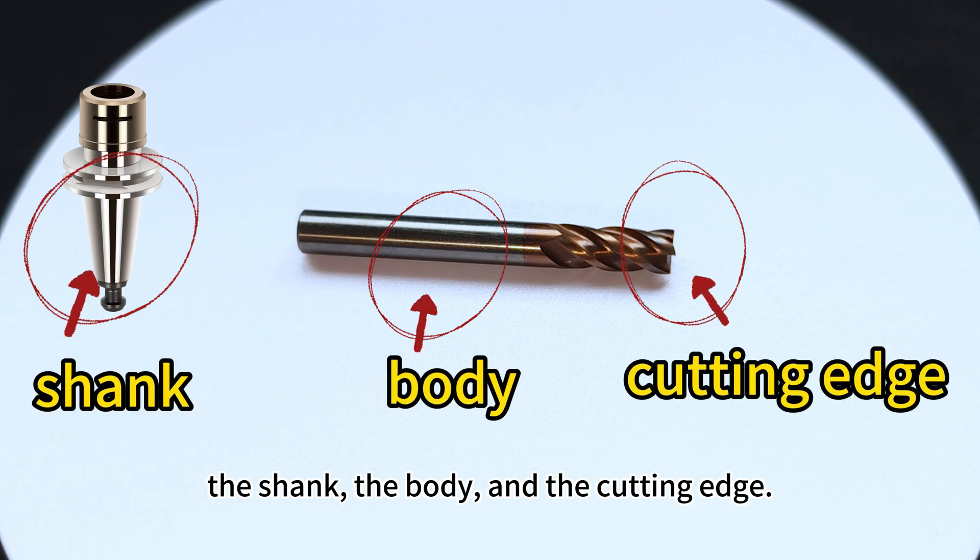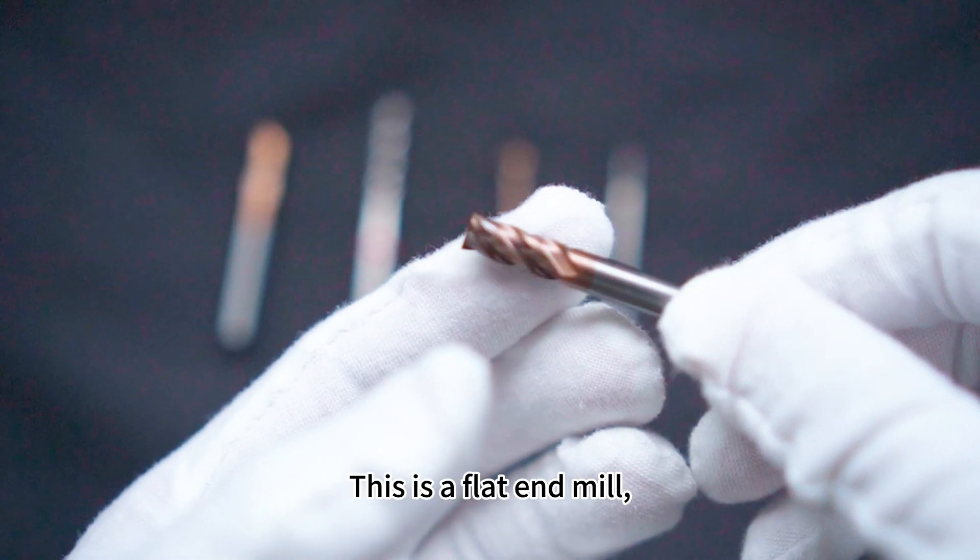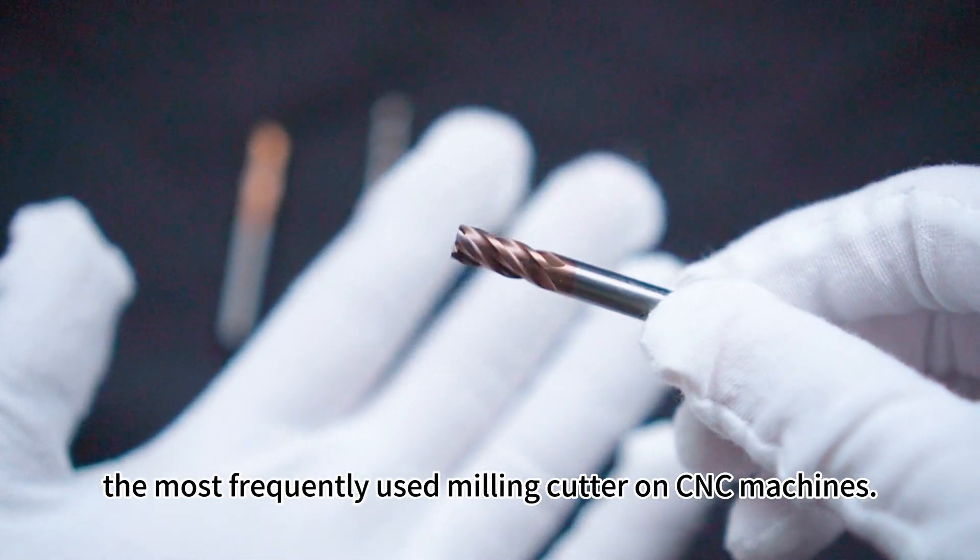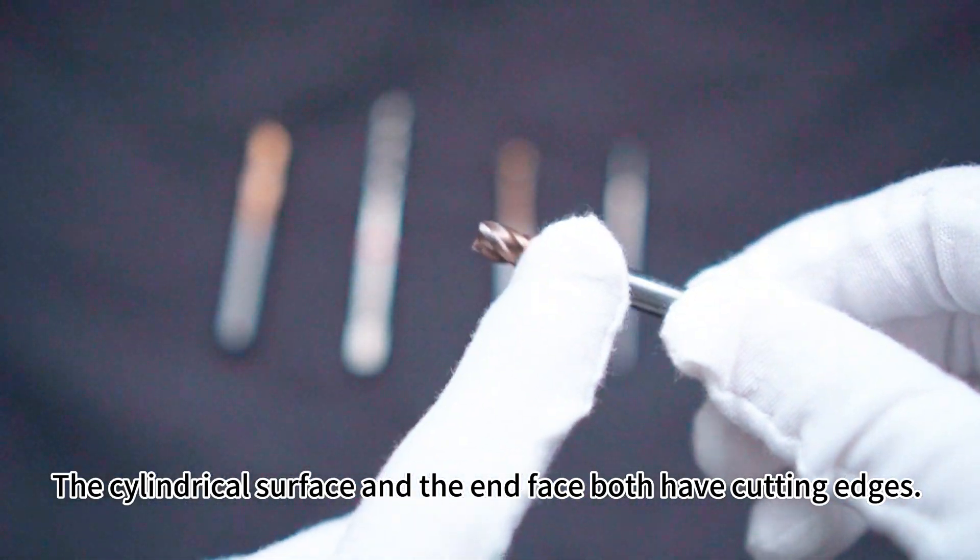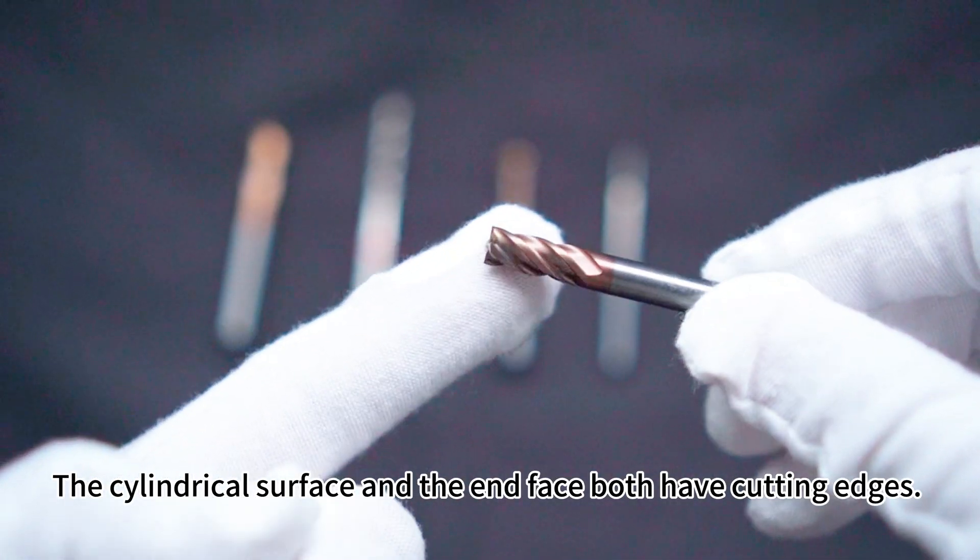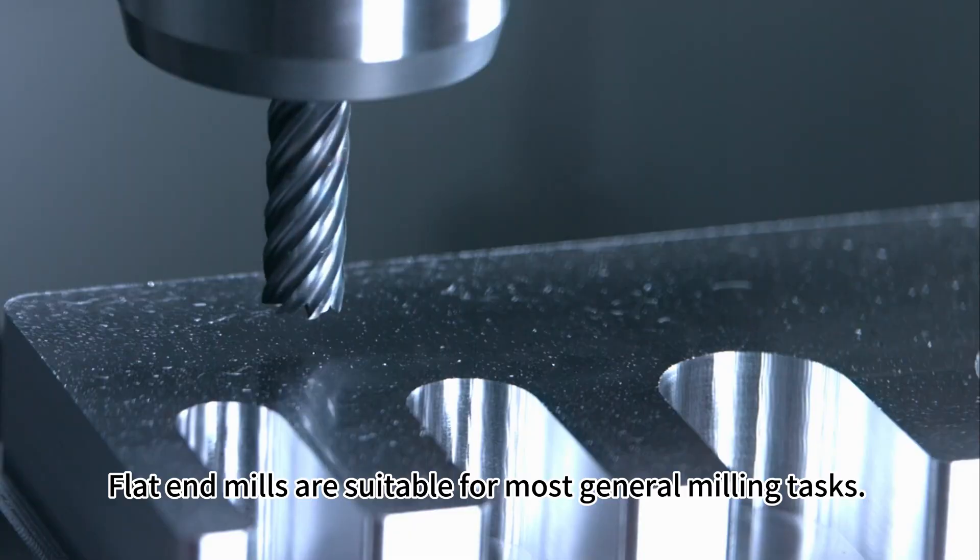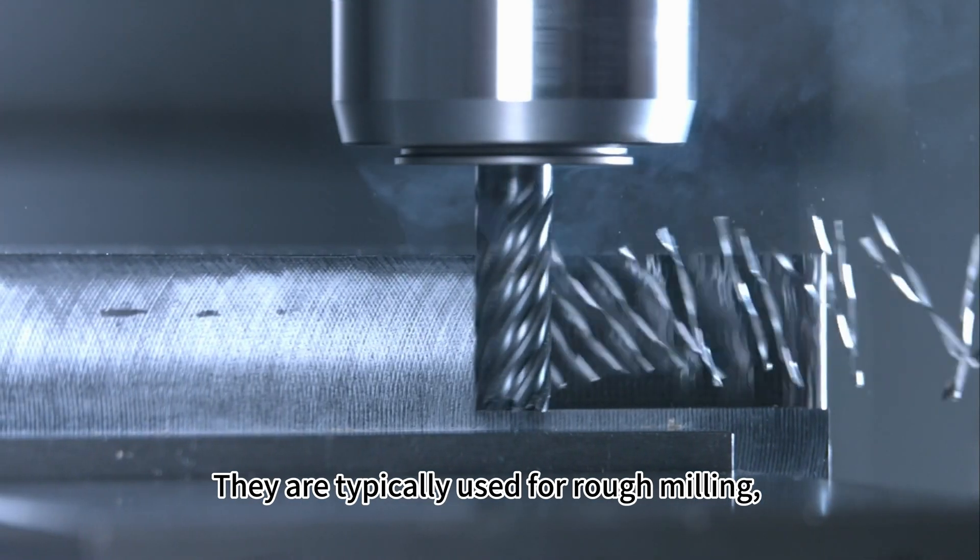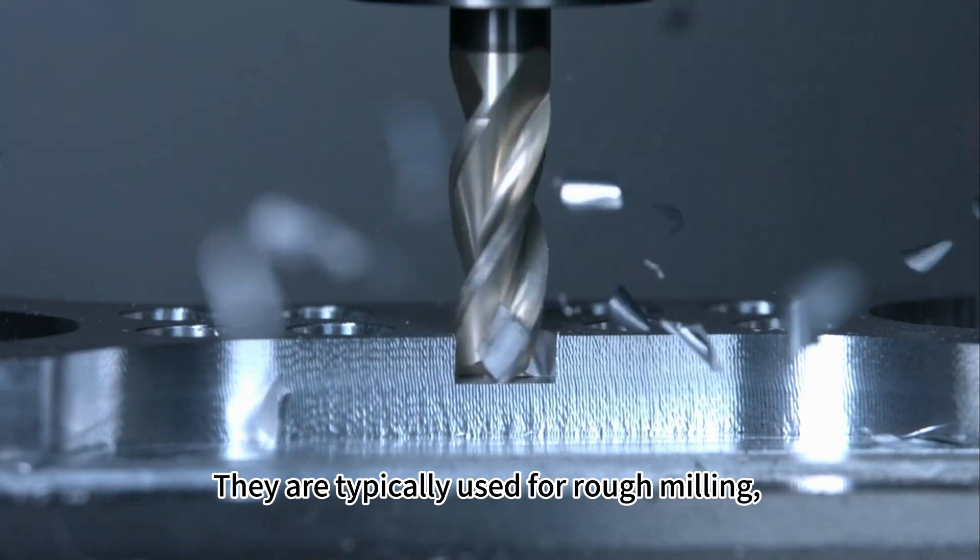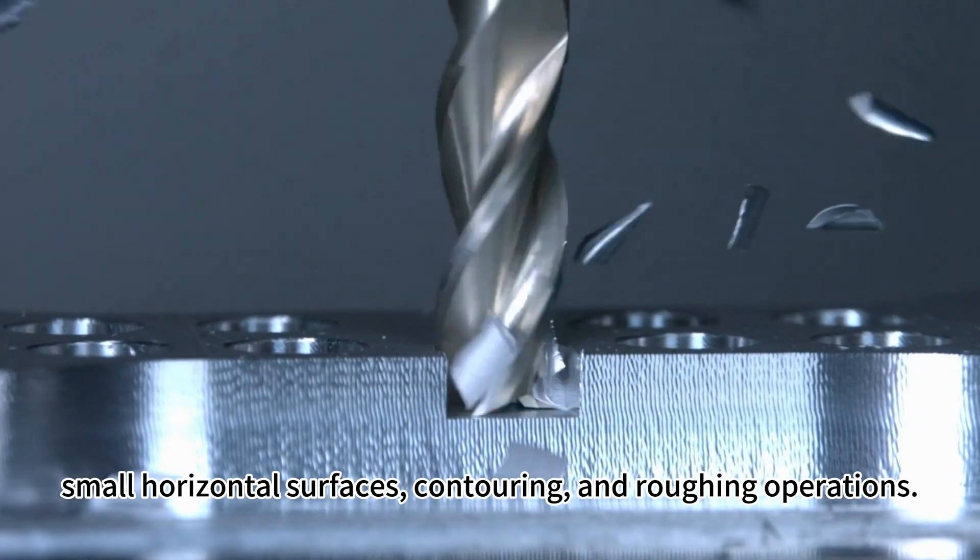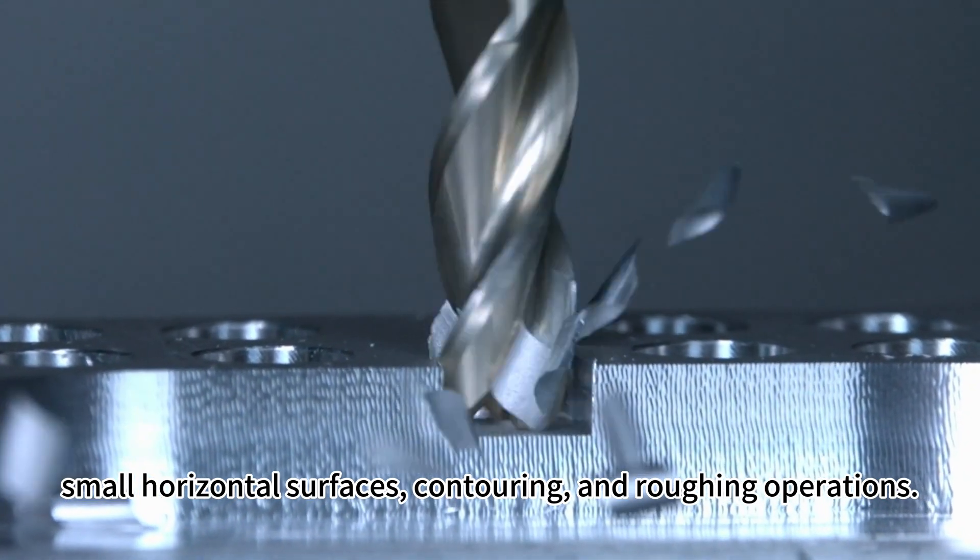This is a flat end mill, the most frequently used milling cutter on CNC machines. The cylindrical surface and the end face both have cutting edges. Flat end mills are suitable for most general milling tasks. They are typically used for rough milling, removing large amounts of material, small horizontal surfaces, contouring, and roughing operations.